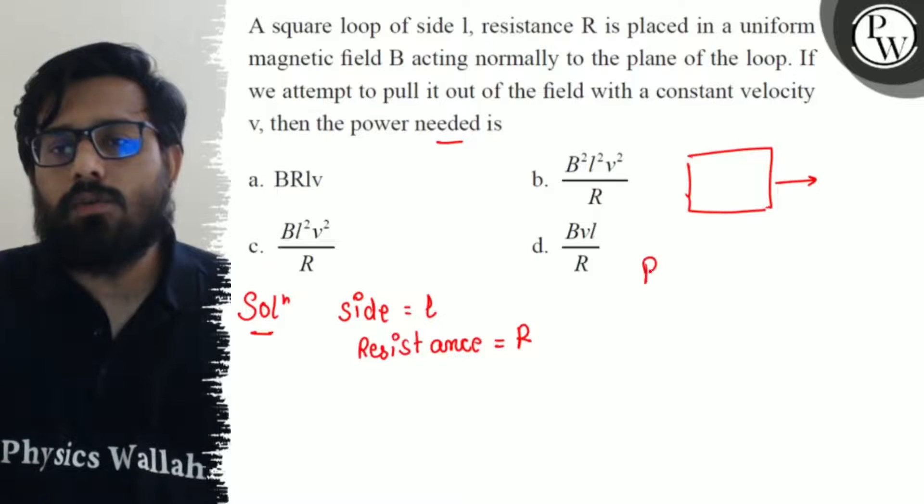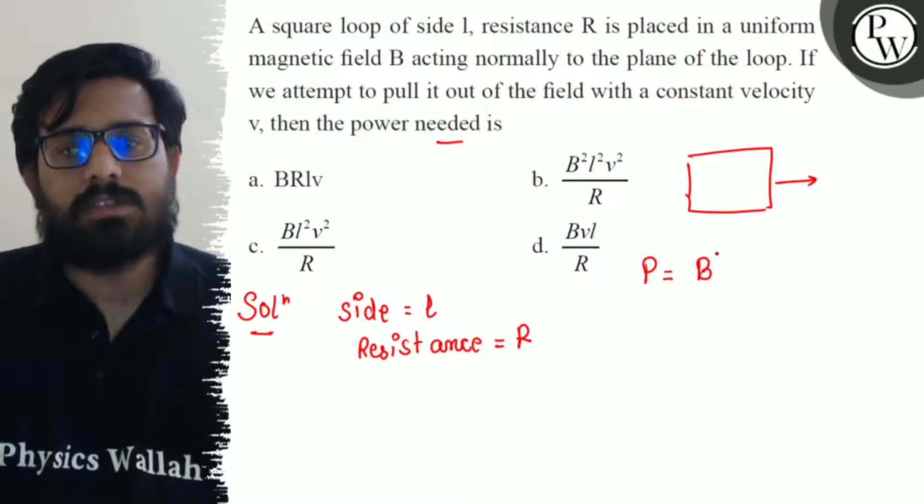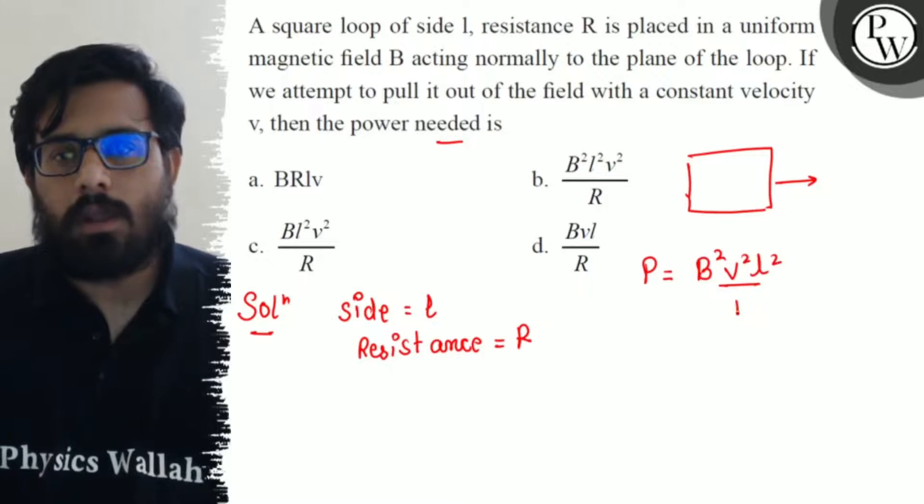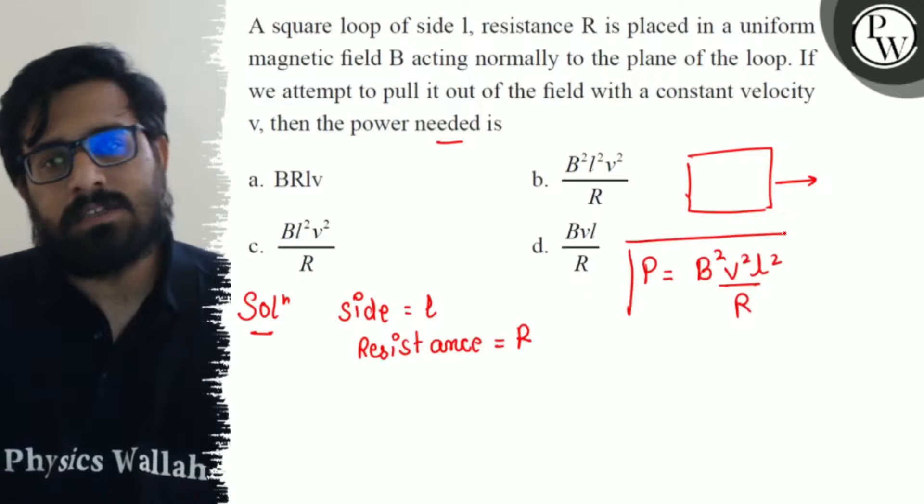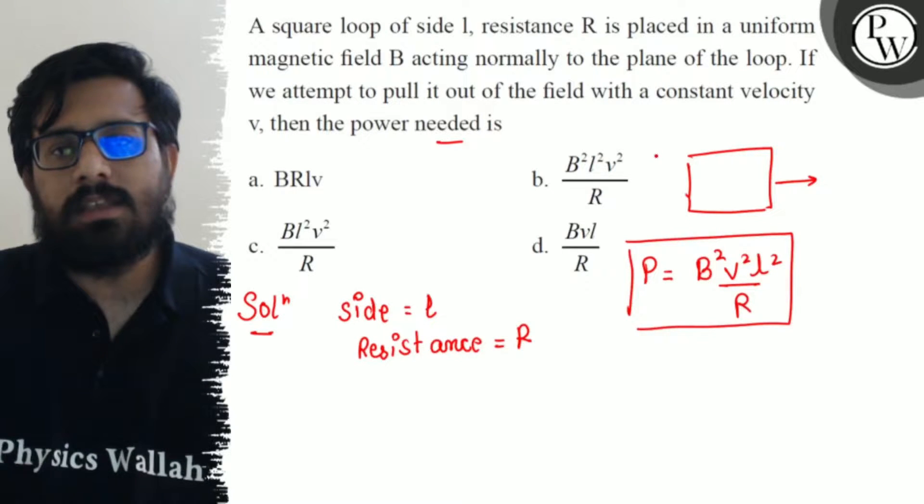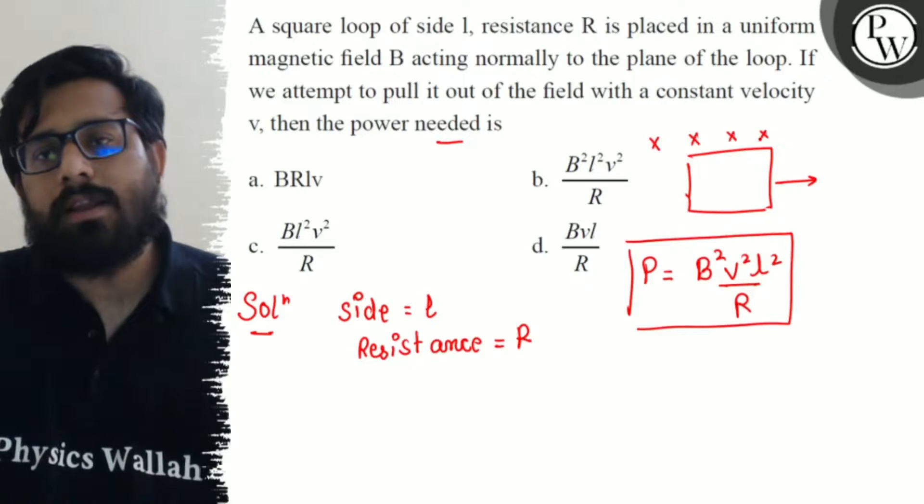So from the direct formula, we know that power equals B square V square L square upon R. So this is the power which is needed to pull this square loop out of the magnetic field.